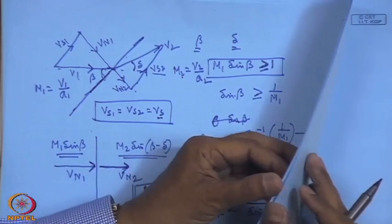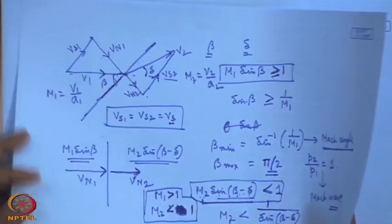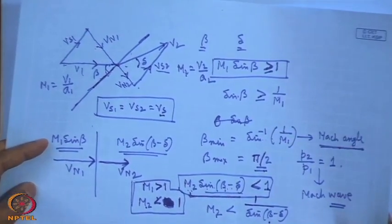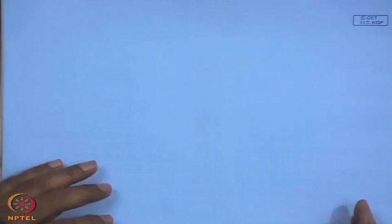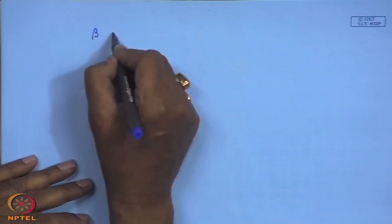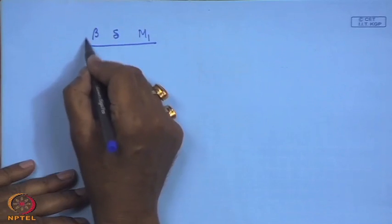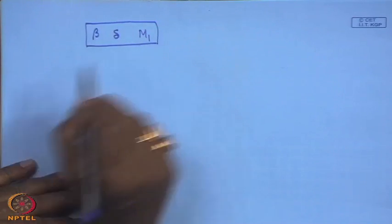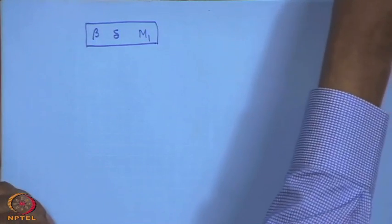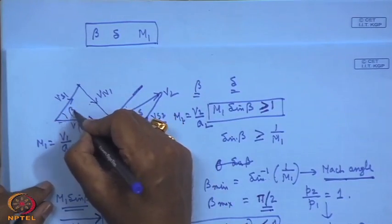We now develop an important expression relating β, δ, and M1. Using the definitions: tan β = VN1/VS1 and tan(β−δ) = VN2/VS2, and since VS1 = VS2, the ratio tan(β−δ)/tan β = VN2/VN1 = ρ1/ρ2 from continuity.